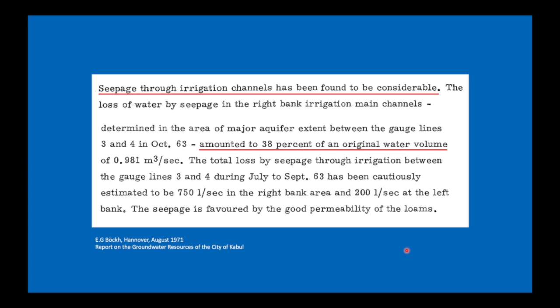Based on Russian studies from the 1960s, a large amount of water is lost through irrigation channels — in one case 38 percent of the original water volume. Estimates were 750 liters per second on the right bank and 200 liters per second on the left bank, totaling about a cubic meter per second lost by seepage — a significant amount.